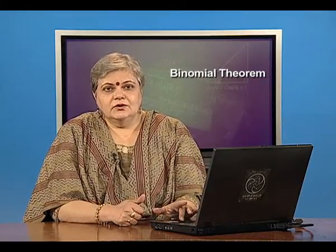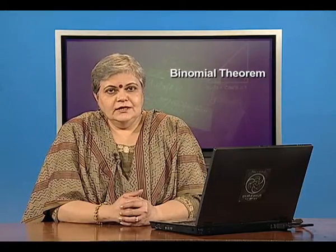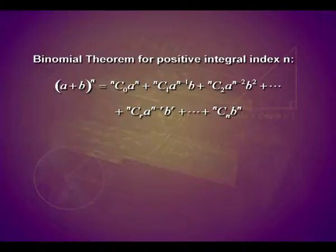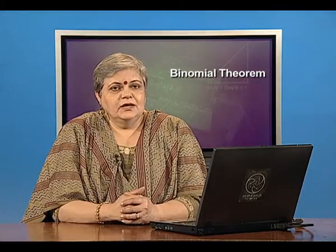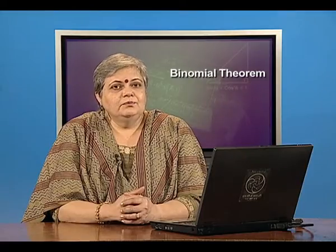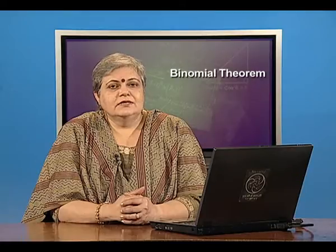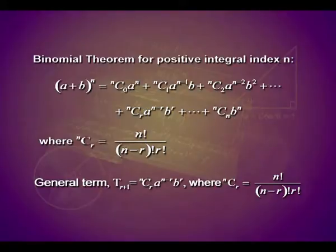Starting with what is binomial theorem: the binomial theorem for positive integral index n states that a plus b raised to the power n expands to n C 0 times a to the power n, plus n C 1 times a to the power n minus 1 times b, plus n C 2 times a to the power n minus 2 times b squared. The general term T(r+1) is given as n C r times a to the power n minus r times b to the power r, and the last term is n C n times b to the power n. Here, the powers of a reduce by 1 in each successive term while the powers of b increase by 1. And n C r is n factorial divided by factorial of (n minus r) times r factorial.